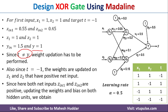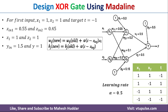Because the target and the calculated output do not match, we go back and update the hidden layer weights using the update equations: W_IJ_new = W_IJ_old + α·(T − Zin_J)·X_I, and B_J_new = B_J_old + α·(T − Zin_J). The input for the bias term is always 1.